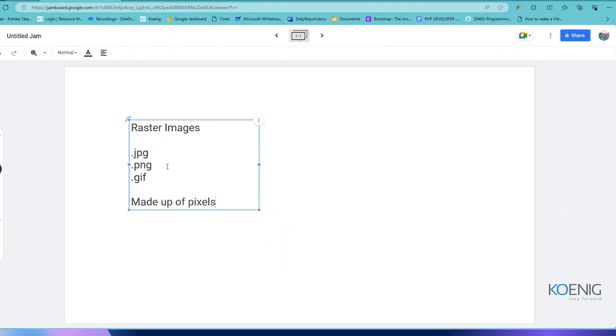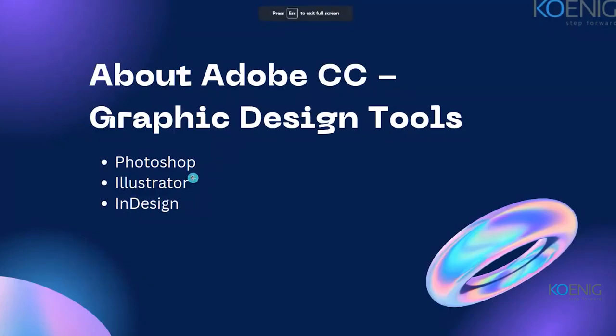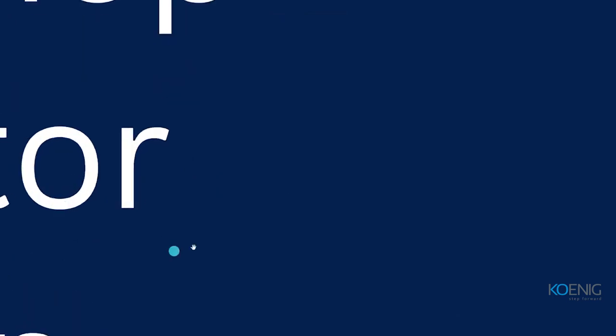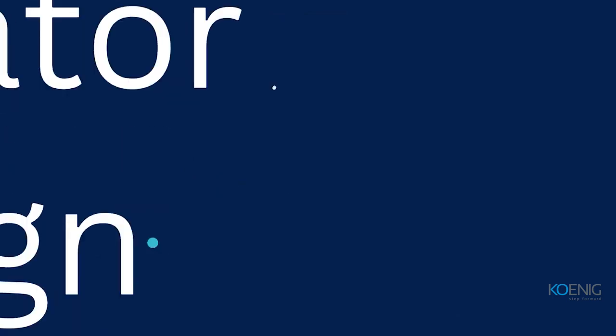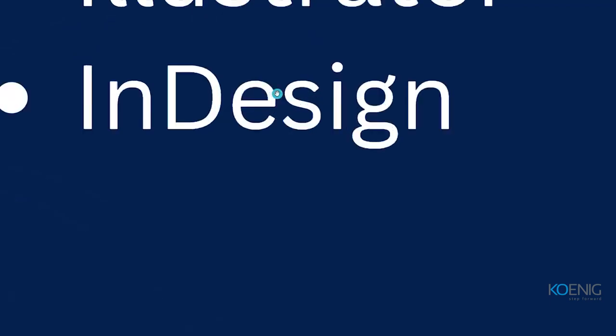Pixels are tiny square blocks which come together to create your graphic on the web. Whatever you see on your screen, most of it is in pixels. If you zoom in quite a lot, in areas of the design you might be able to see a slight blurriness — those are your pixels. These graphics are made up of pixels.